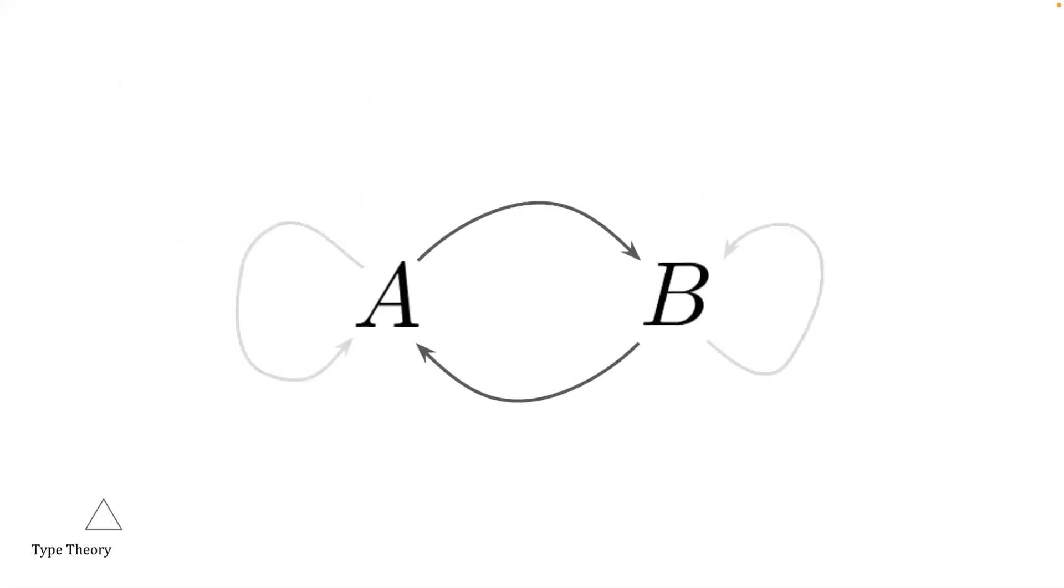Recall what we learned in category theory. If A and B are categories, then, if they are isomorphic, it would mean that there exist functors from A to B and B to A, and the mapping of one functor to the other back-to-back will bring you back to where you started.